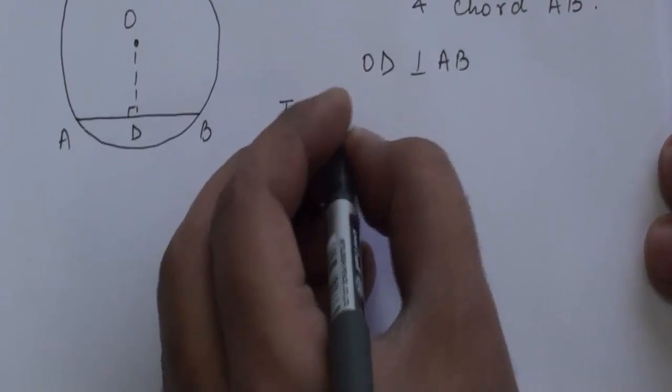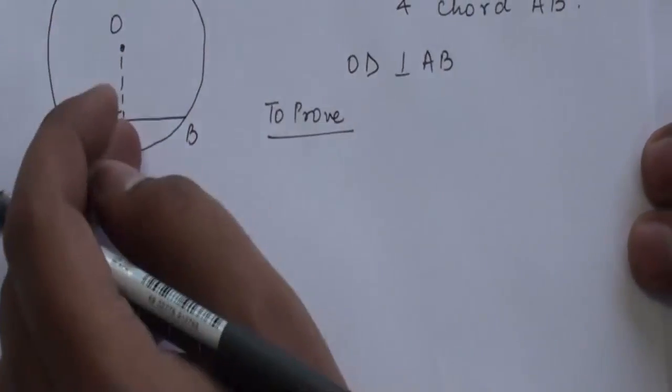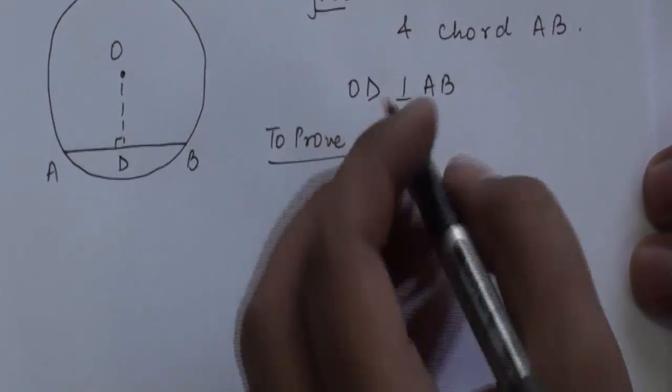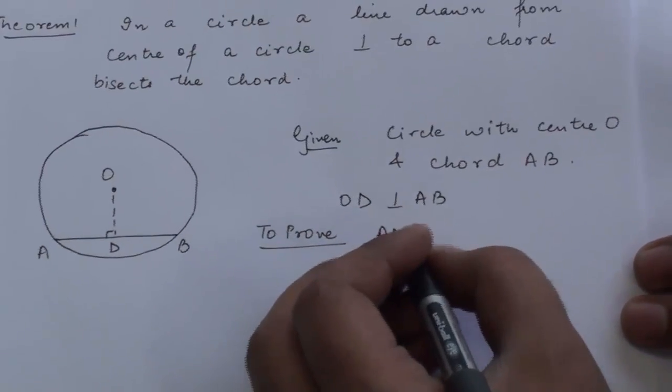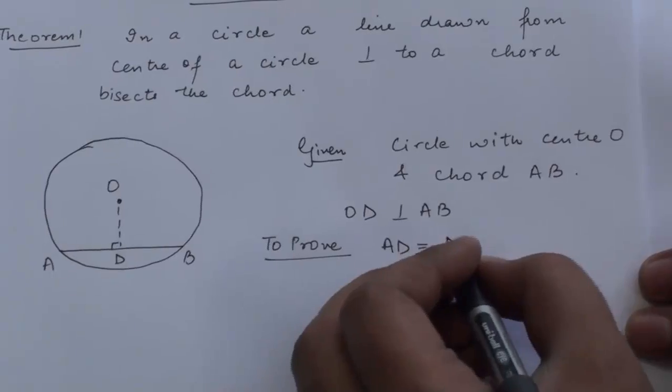What we have to prove is: this OD also bisects AB. That means we have to prove AD is equal to DB.